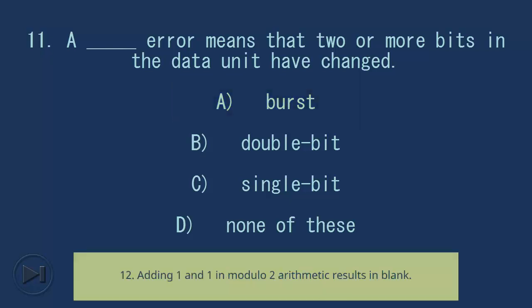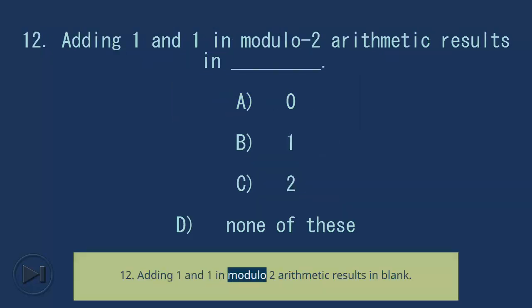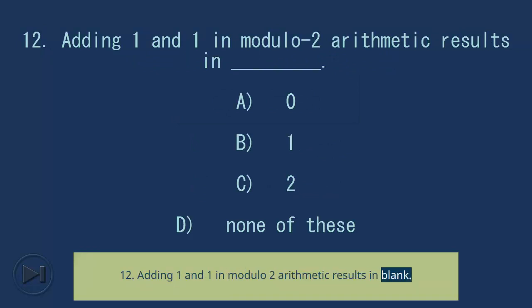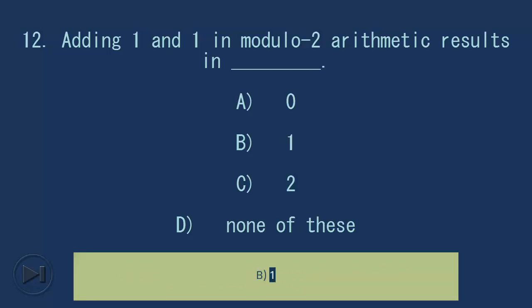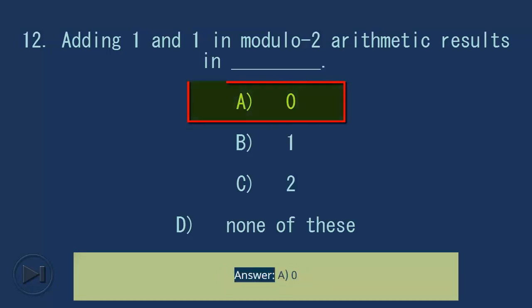Question 12: Adding 1 and 1 in modulo 2 arithmetic results in blank. A) 0, B) 1, C) 2, D) none of these. Answer: A, 0.